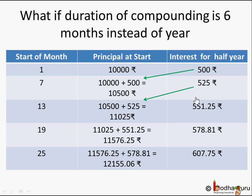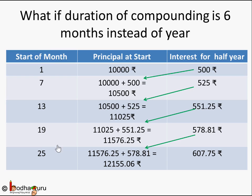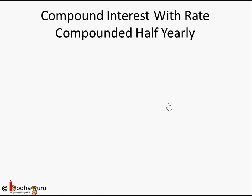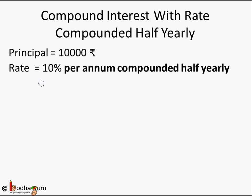Compare this with the annual compounding table. At the end of year one with annual compounding you earned 1,000 rupees interest, but with half-yearly compounding you earn 1,025 rupees. At the end of year two, annual compounding gives 1,100 rupees, but half-yearly gives more. Because you are compounding faster, you are using a larger principal sooner, so your interest increases.